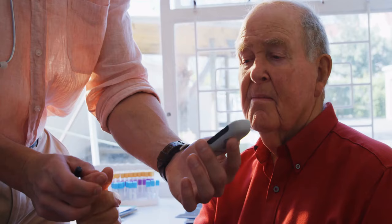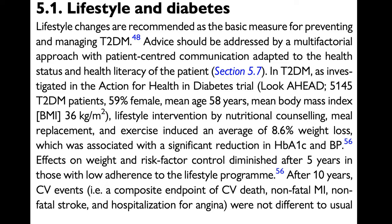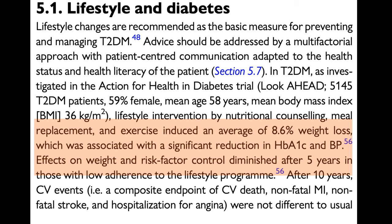Controlling blood sugar and reducing hemoglobin A1c will decrease microvascular complications like neuropathy, retinopathy, and nephropathy. But the effects on myocardial infarction, stroke, and death are vague. We had large studies that failed to show a protective effect for intensive glycemic control on macrovascular events.